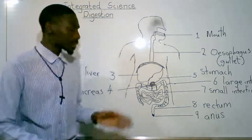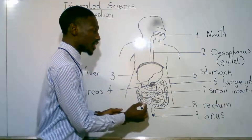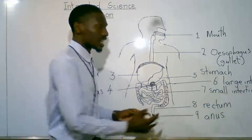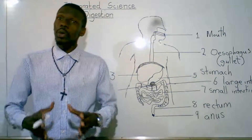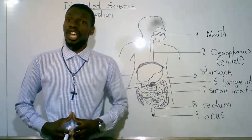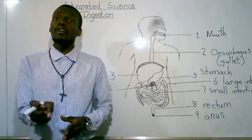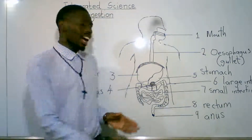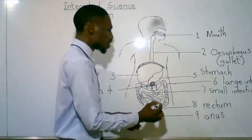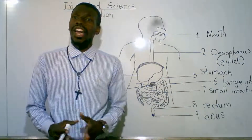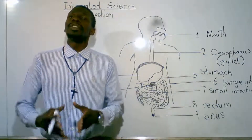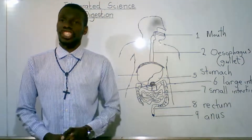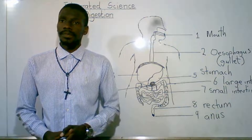From the small intestine, the undigested food goes into the large intestine. In the large intestine, no digestion takes place. It's only the absorption of minerals and water that is done. Then the undigested food is pushed into the rectum where it is temporarily stored before elimination, through the process known as defecation.